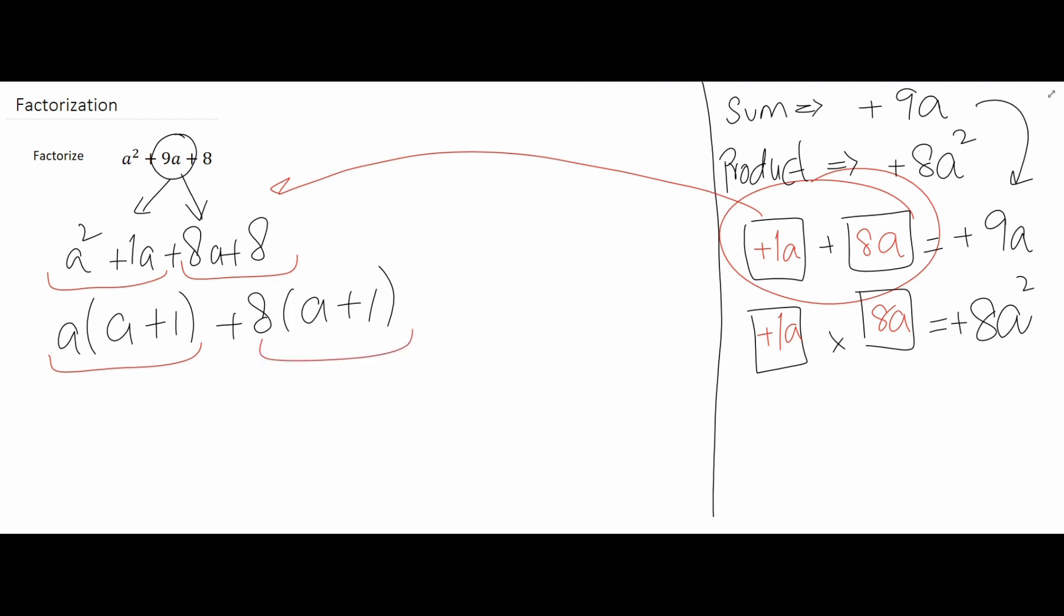And by looking at these two numbers we can see that the bracket a plus 1 is common in both. So we can write this bracket outside as common, and then we are going to be left with a in the first and then 8 in the second.